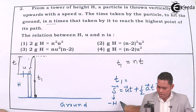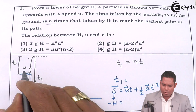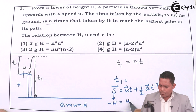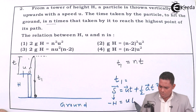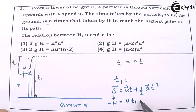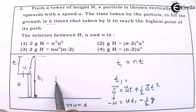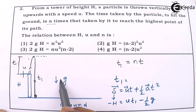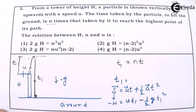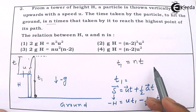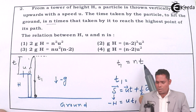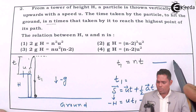Now, u is thrown upward so it is positive. The time taken is t1. The acceleration due to gravity is downward, so it is negative: minus g. The equation becomes: minus h = u·t1 minus ½·g·t1². This is equation number 1, from which I will get t1.